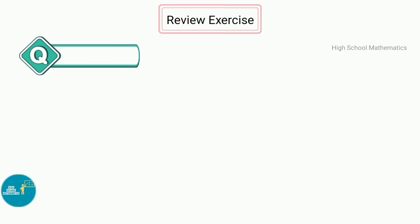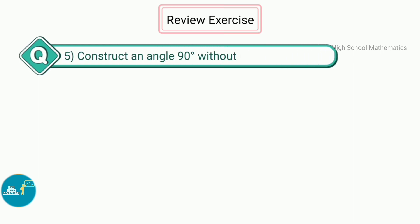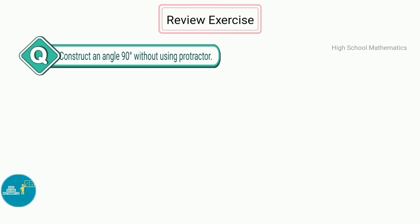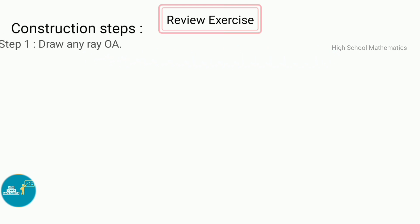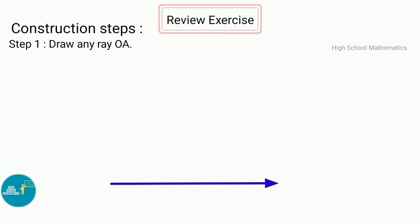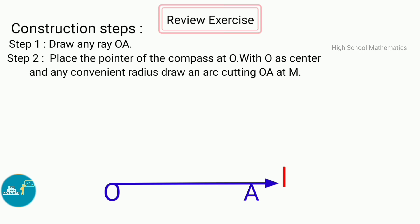Question number 5: Construct an angle of 90 degrees without using a protractor. Step 1 — draw any ray OA. Step 2 — place the pointer of the compass at O; with O as center and any convenient radius, draw an arc cutting OA at M.